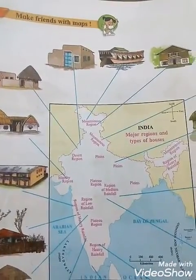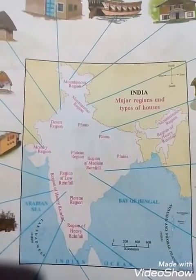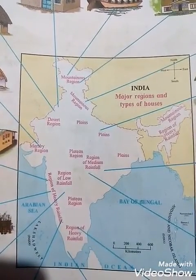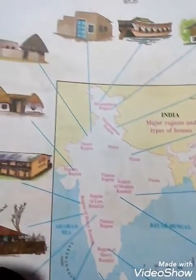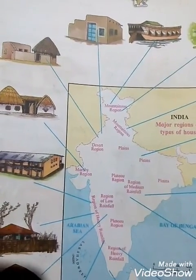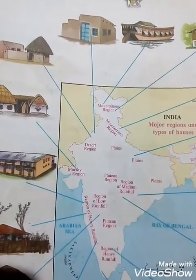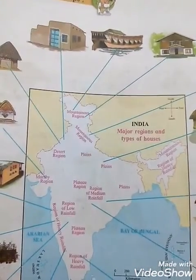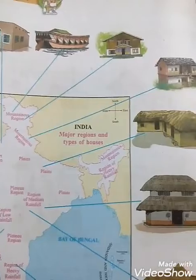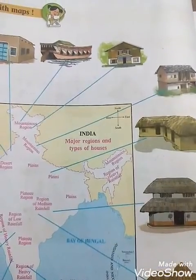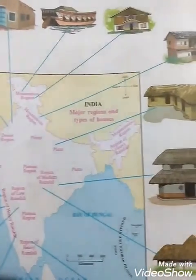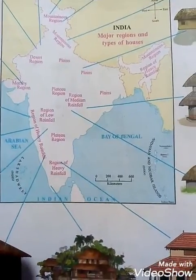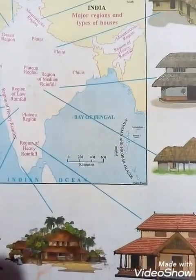Make friend with map. This is your India map showing major regions and types of houses. Which place has what types of houses is shown here. In the desert, this type of house is there. In mountainous places, they build houses differently. In the plain area, this type of house is there. In the region of medium rainfall and heavy rainfall, different types of houses are shown.